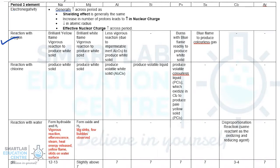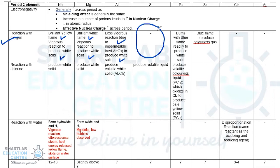Reaction with oxygen. Sodium burns with a brilliant yellow flame, reacting vigorously to produce white solid sodium oxide. Magnesium burns with a brilliant white flame in a vigorous reaction, producing white solid magnesium oxide. Aluminium reacts much less vigorously because it is protected by an impermeable aluminium oxide layer; if it does react, it still produces a white solid. Silicon does not easily burn in oxygen due to its giant molecular lattice structure held by strong covalent bonds. Phosphorus burns in oxygen with a blue flame, readily forming white solid P₄O₁₀. S₈ also burns in oxygen with a blue flame, forming colorless sulfur dioxide gas. The remaining elements do not readily react with oxygen.